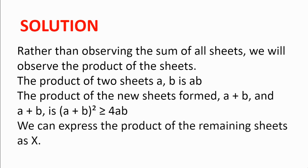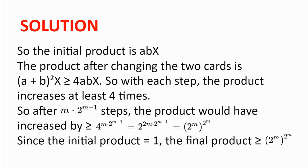We can express the product of the remaining sheets as X, as this will not be the center of focus. The initial product is X multiplied by AB, and the product after changing the two cards is (A plus B) squared multiplied by X, which we already know is greater or equal to 4AB multiplied by X. So with each step, the product increases by at least 4 times.